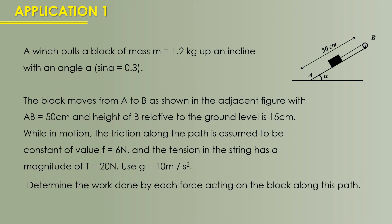In application one, we have a winch pulling a block of given mass along an inclined plane. The block moves from A to B, low to high, with AB being 50 centimeters and the height of B being 15 centimeters. While in motion, friction is constant at 6 newtons, the tension in the string is 20 newtons, and g equals 10. Determine the work done by each force acting on the block along this path.